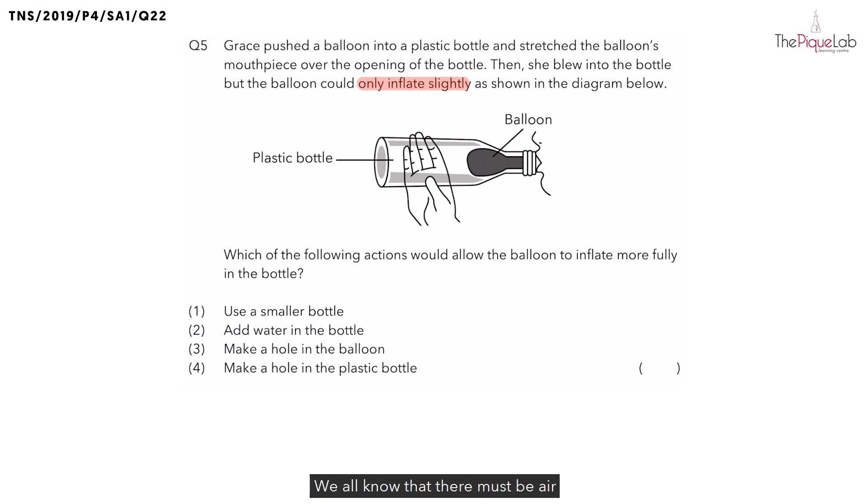We all know that there must be air that is inside the bottle. And air, we all know, is a form of matter. We know that matter occupies space in the bottle. So let's write this down. We know that the air occupies space in the bottle.